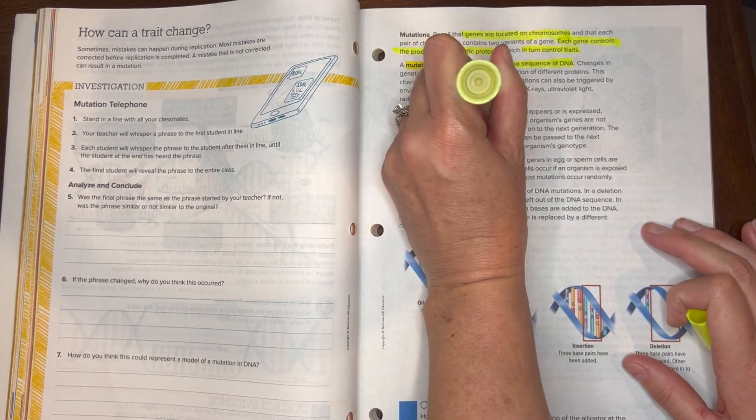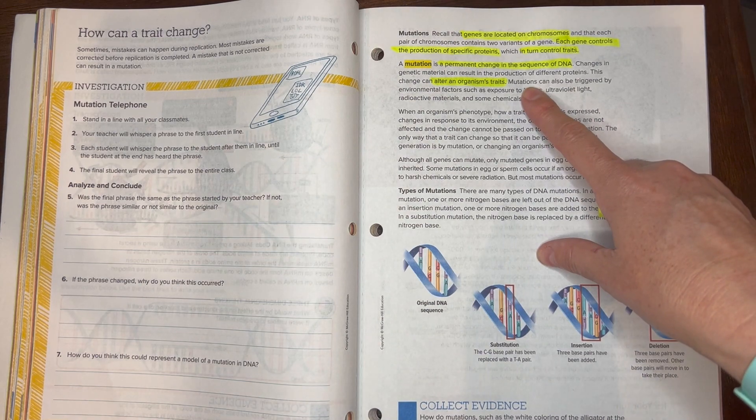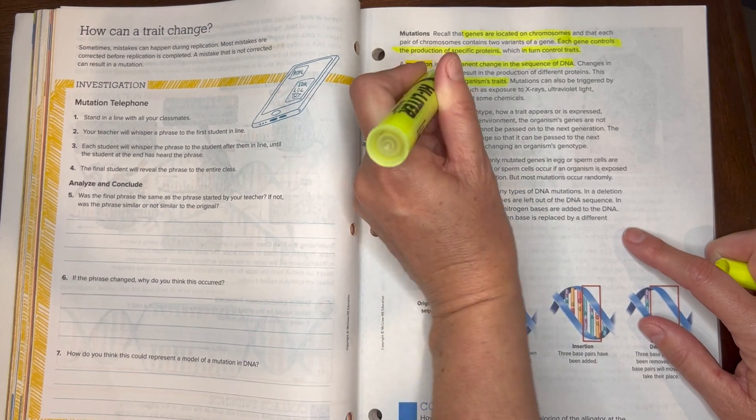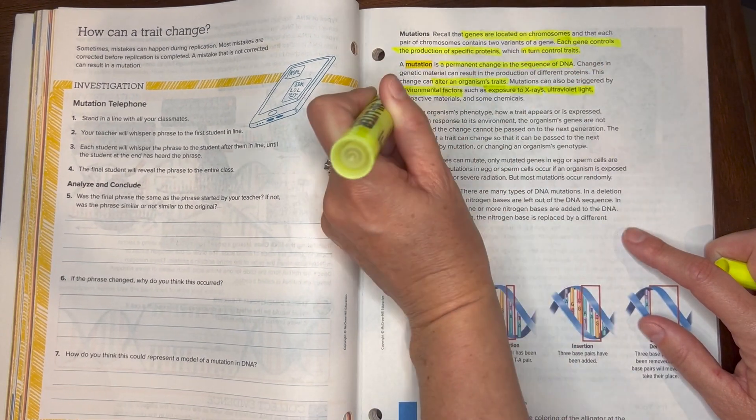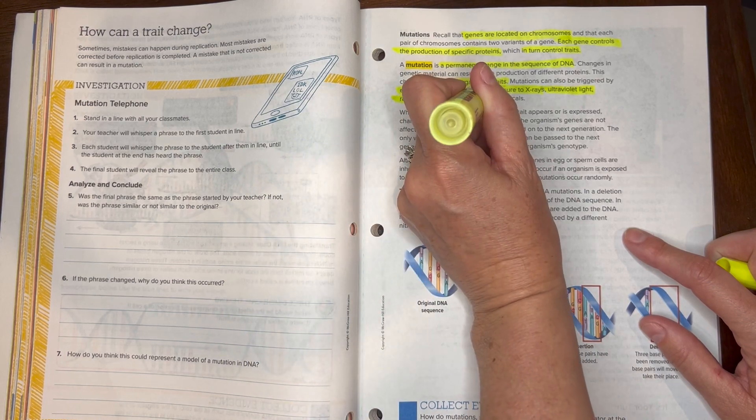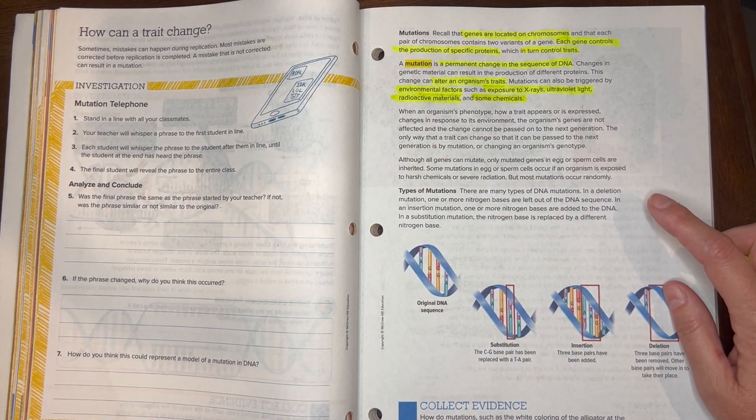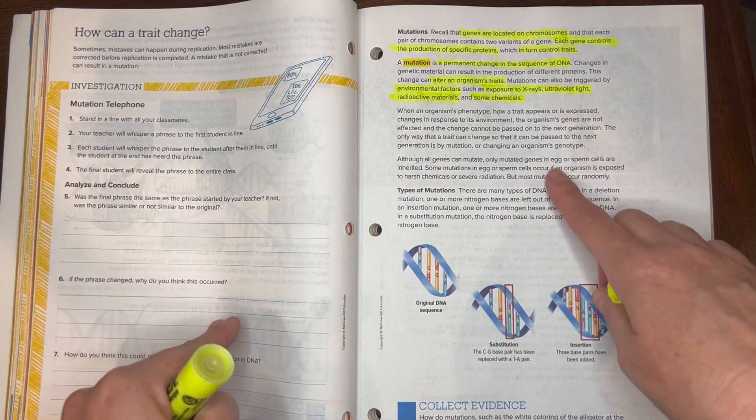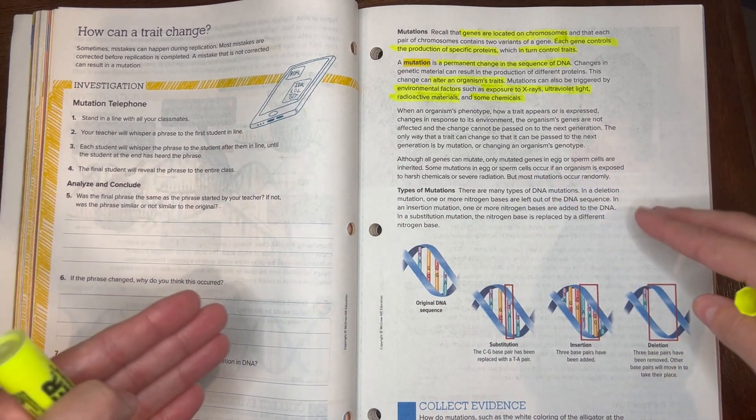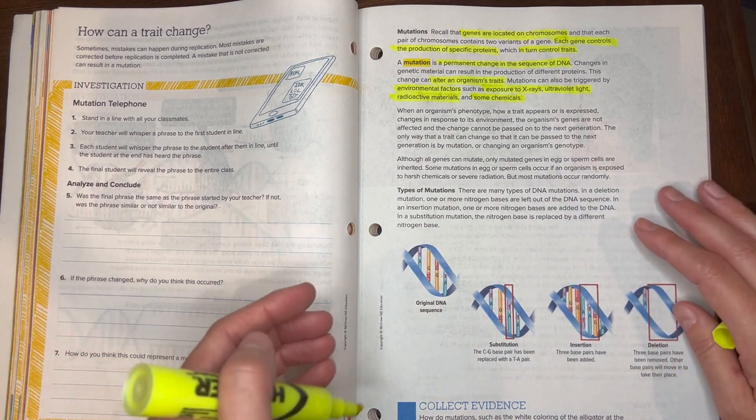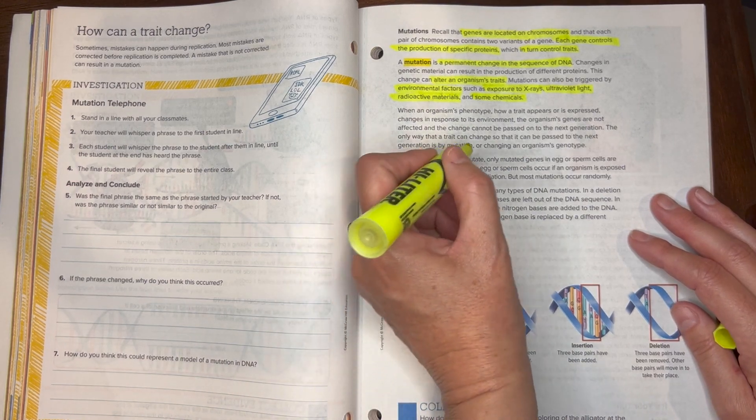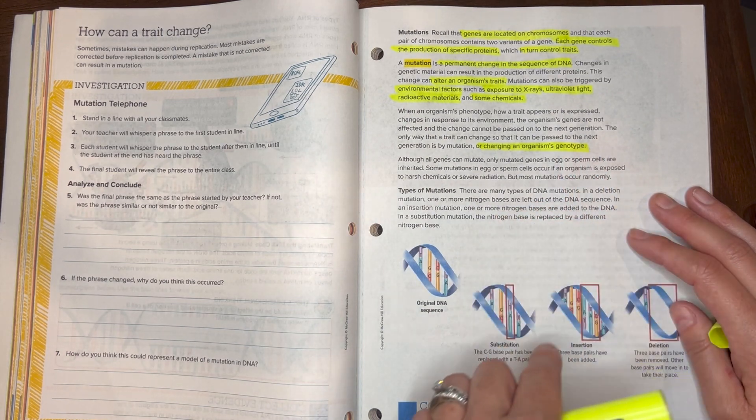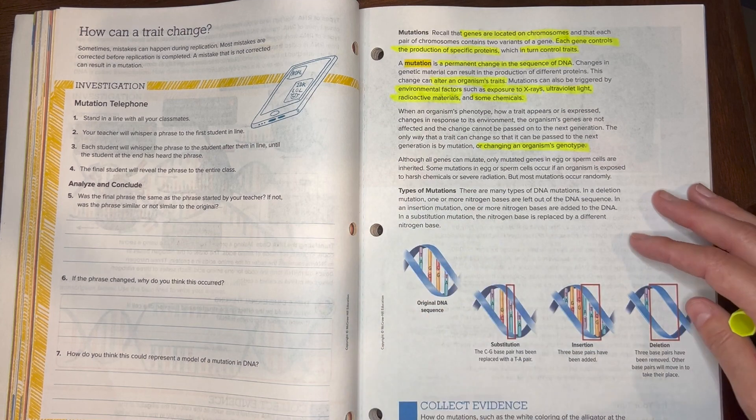This can control the production of different proteins and alter an organism's traits. Mutations could be triggered by environmental factors such as exposure to x-rays or ultraviolet light, maybe even radioactive materials and possibly some chemicals. The only way to pass this mutation down to the next generation is if the DNA is actually altered, so it would have to change the organism's genotype or their actual genes.